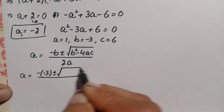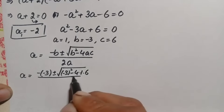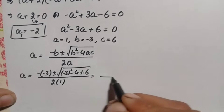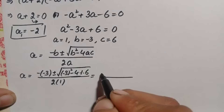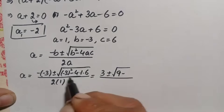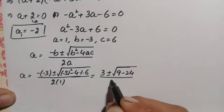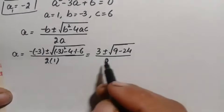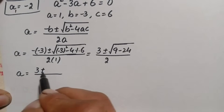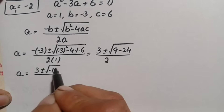Simplifying further: negative 3 squared is 9, and 4 times 6 is 24. So we get 3 plus or minus the square root of 9 minus 24, divided by 2, which gives 3 plus or minus the square root of negative 15, divided by 2.